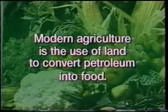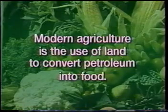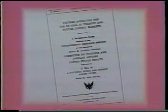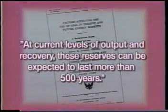What does this mean in terms of food? Modern agriculture is the use of land to convert petroleum into food. In the early 1970s, an ad from the American Electric Power Company said: 'don't worry too much, because we're sitting on half of the world's known supply of coal.' That claim may have originated from a report to the Senate Committee on Interior and Insular Affairs, which stated: 'At current levels of output and recovery, these American coal reserves can be expected to last more than 500 years.' That is one of the most dangerous statements in the literature.